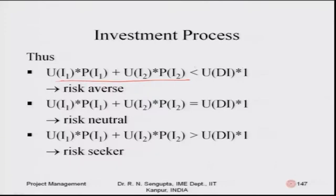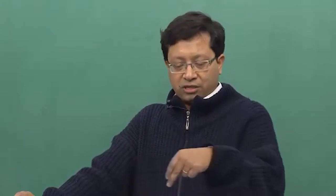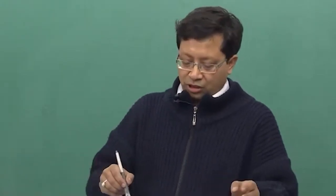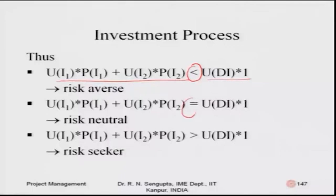On the right-hand side is the sure event — the deterministic investment di multiplied by one, which is the probability. If the left-hand side (the gamble) is less than the right-hand side (the sure event), the person is more inclined to take the sure event, so he or she is risk-averse. If there is equality, the person is indifferent; if the left-hand side is greater, the person is a risk-seeker.